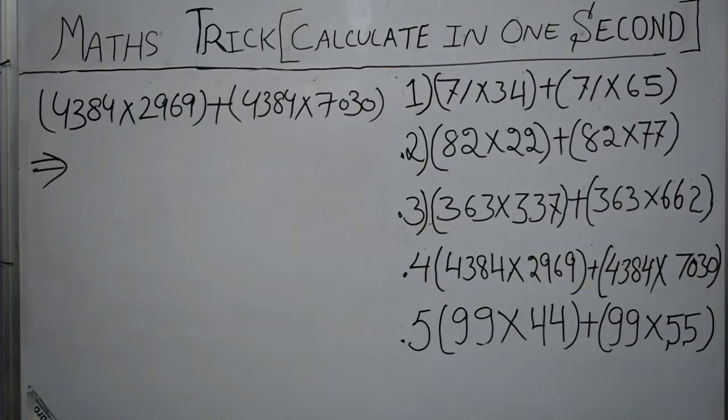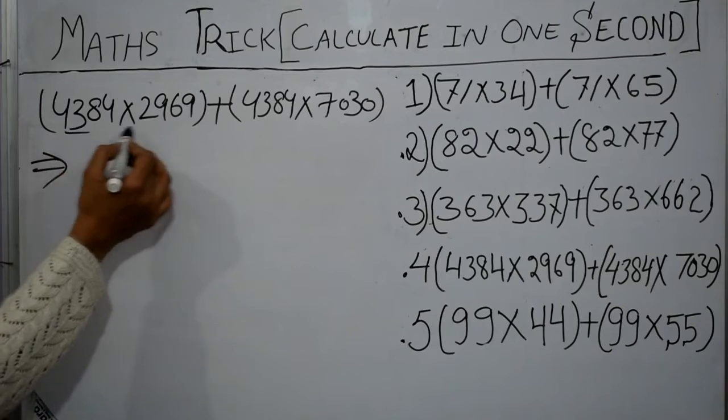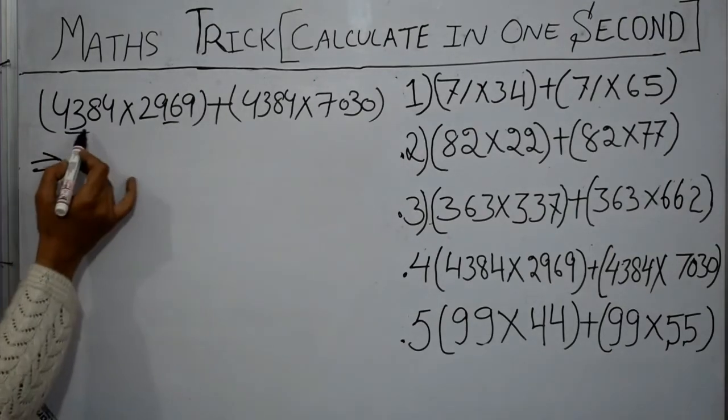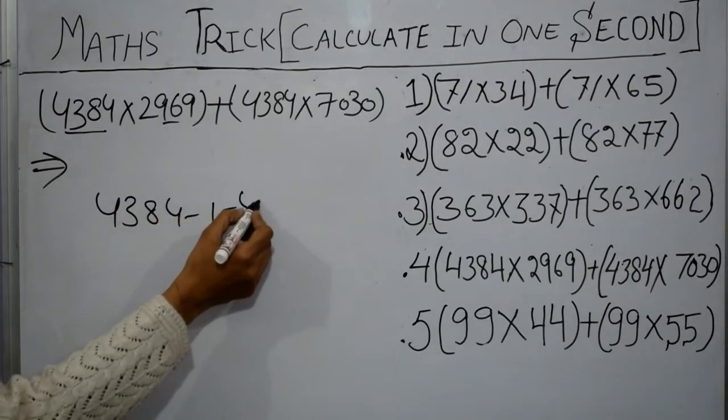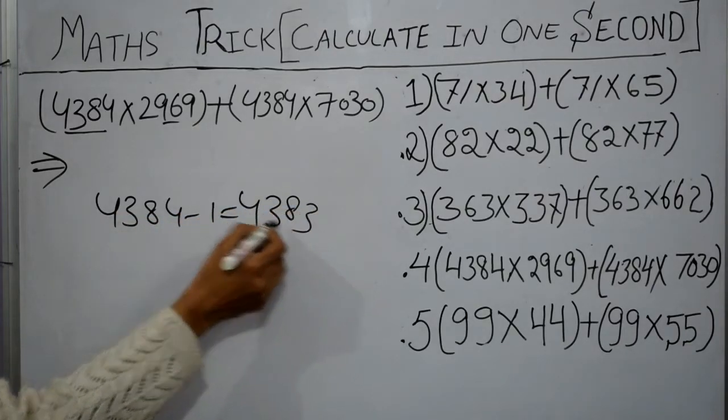In the fourth sum you can see there are four digits. We have to look at the first number. Subtract 1 from the first number, we got 4383.